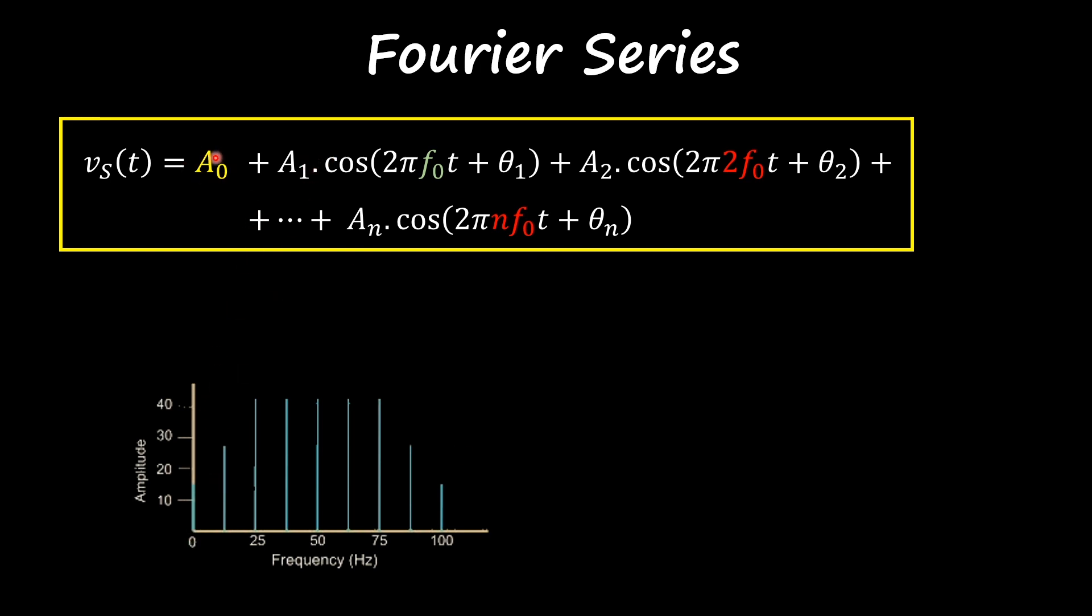So A₀ is the DC component or your average value. There is no frequency for it, so it's the first point that you have here in this graph. Then you have A₁ with the fundamental frequency, then A₂ and the respective harmonic, so forth. Then you plot the rest until you plot all your harmonics and this is what it's called an amplitude spectrum.